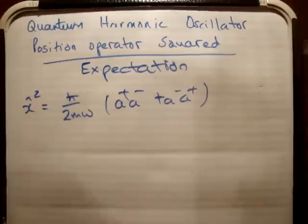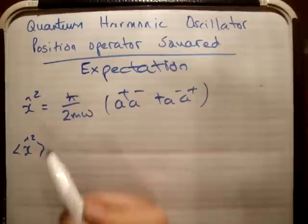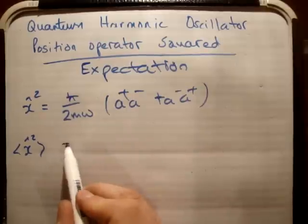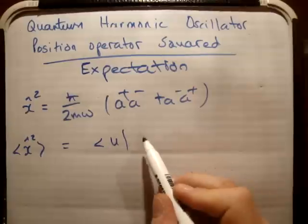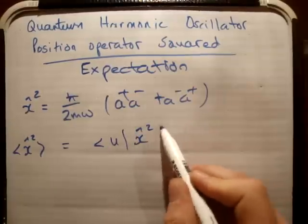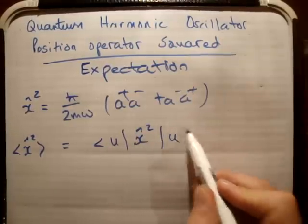So what we need to do now is get the expectation value, and how you calculate the expectation value of an observable is you do the following: you put it into a wave function like this and you calculate the following integral.